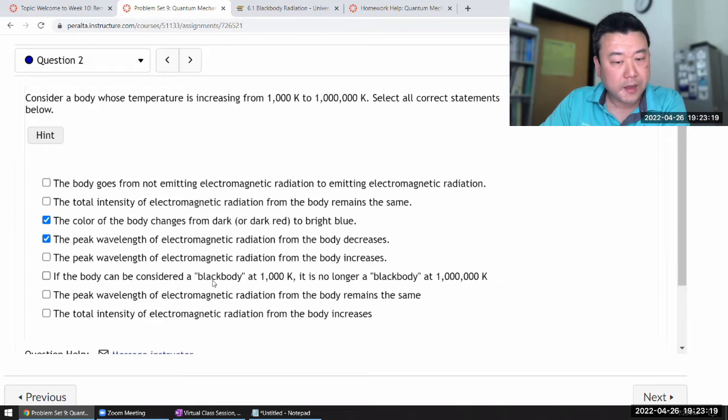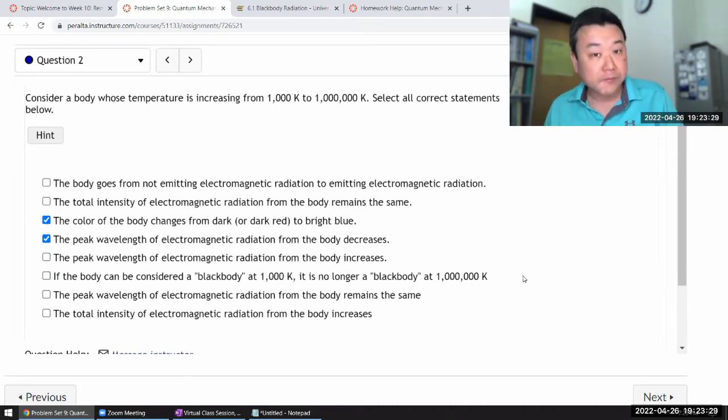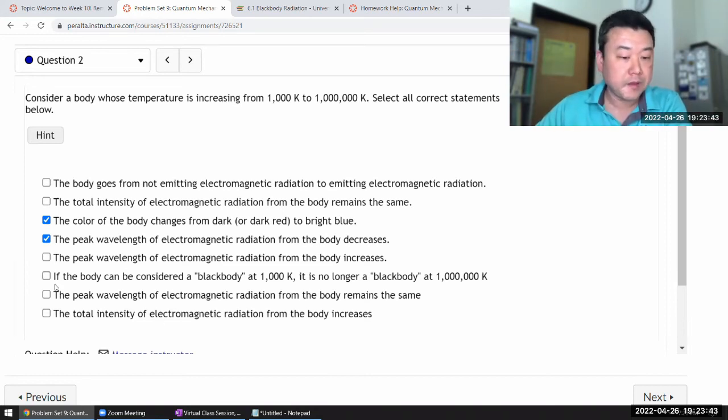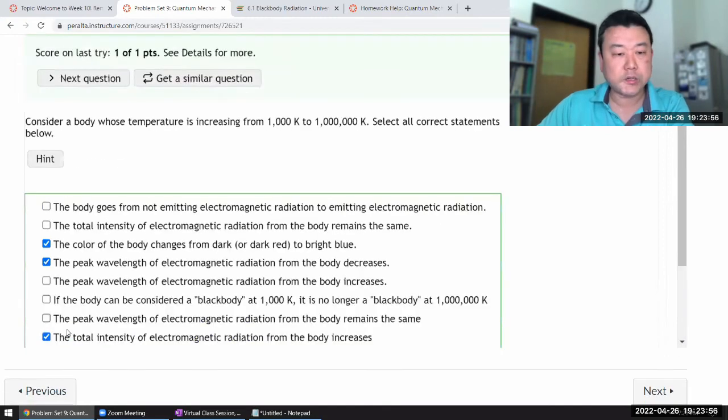If the body can be considered a black body. The phrase black body refers to it. Wait, so that's not correct. It refers to emissivity of the body, technically speaking. A black body is a body with the emissivity of one. It's the perfect absorber of radiation. Also the perfect emitter of thermal radiation. So, yeah. The peak wavelength does not remain the same. That's there. The total intensity, yeah, it increases as T to the power of...